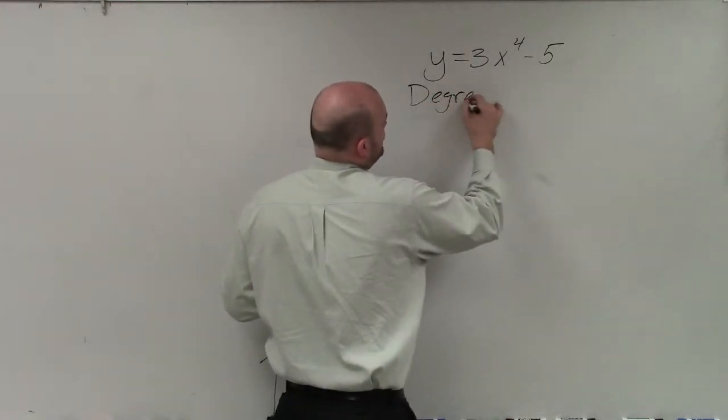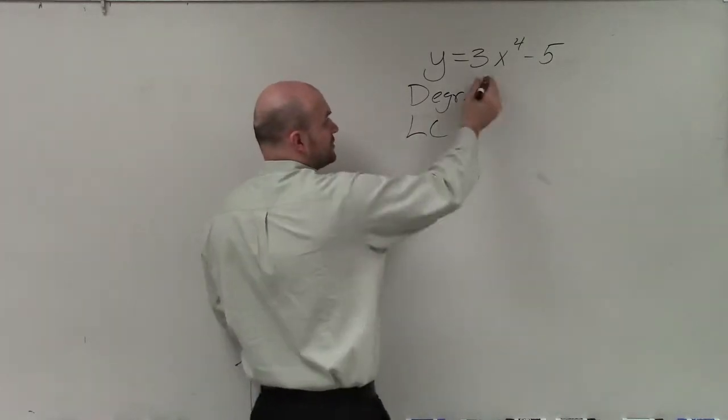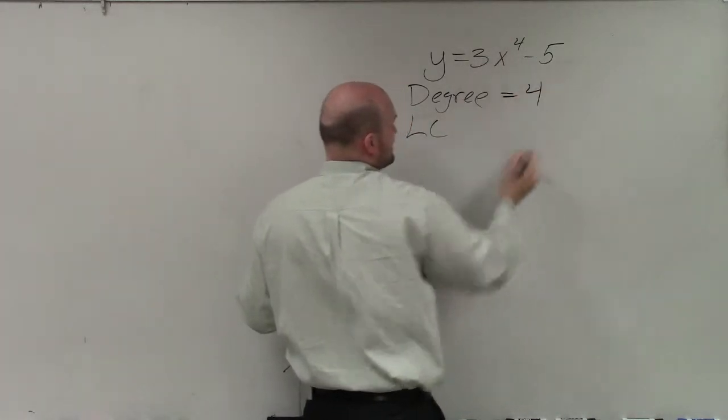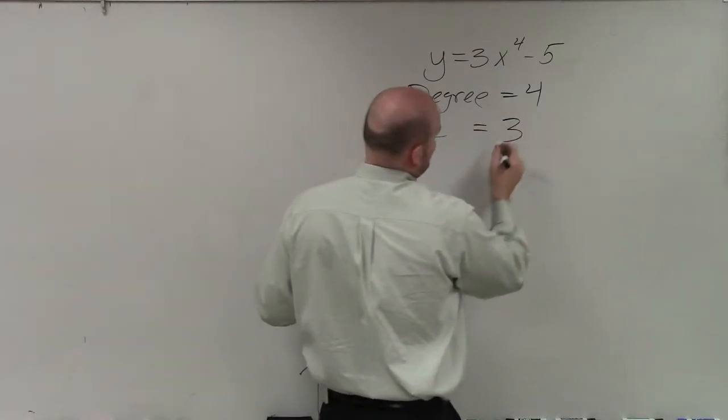We just need to determine our degree and our leading coefficient of our polynomial. The degree, again, is our largest power, which in this case is 4. And our leading coefficient in this case is 3.